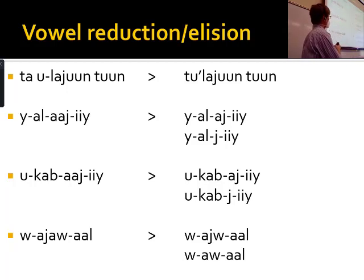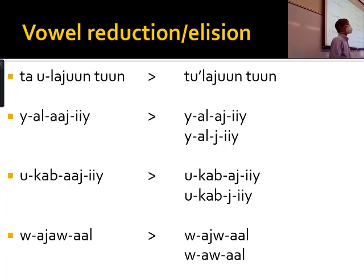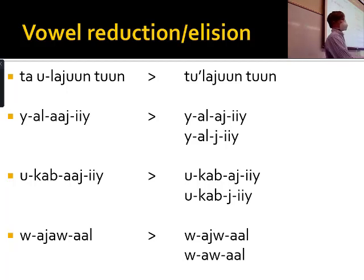The same process affects middle vowels in words when you add additional suffixes or prefixes — they just disappear. The last syllable is sort of stressed and the middle one is the one that usually goes away. For example, 'ukabhi,' 'yalhi' — not 'yalahi.' You can't have two long vowels in a word, so the middle one probably shortens and then goes away entirely. We call it vowel reduction or elision, a common process in many languages including Mayan.